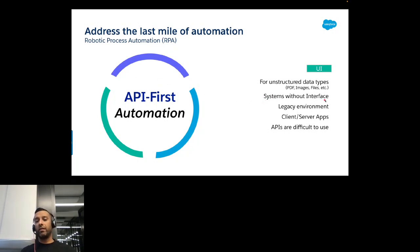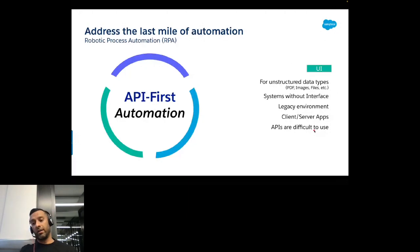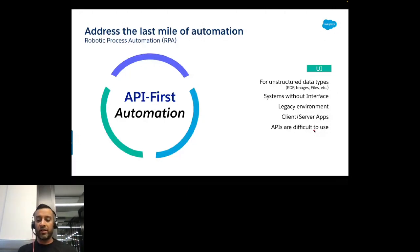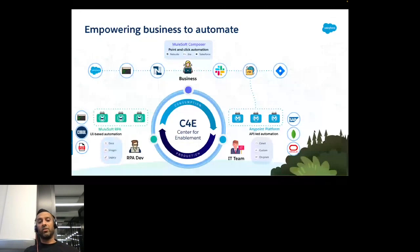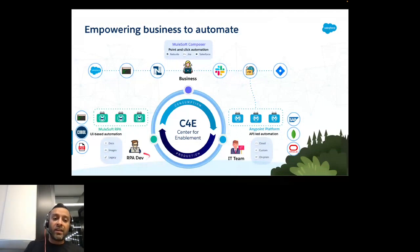Now imagine a new app MuleSoft doesn't provide connectivity for and the interfaces are super complex — what about a mainframe application providing no API? We believe this is the right use case for RPA: addressing the last mile of automation. RPA also helps for unstructured data like PDFs — 80 to 90 percent of data within any organization is unstructured. For systems with no APIs, legacy applications, client-server apps, or APIs that are super difficult to use, MuleSoft RPA can automate any UI — web or legacy — and address that last mile.